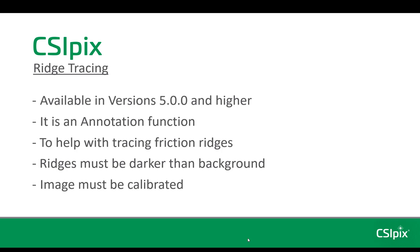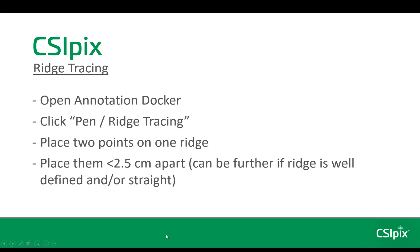The ridges must be darker than the background and the image must be calibrated to use this function. You find it by opening the annotation docker and clicking pen slash ridge tracing.